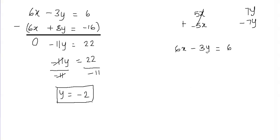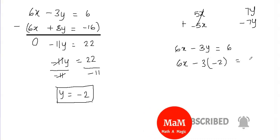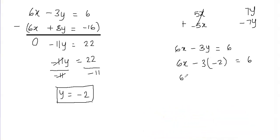Substituting y equals negative 2: 6x minus 3 times negative 2 equals 6. Negative 3 times negative 2 equals positive 6, so 6x plus 6 equals 6. To isolate x, subtract 6 from both sides.